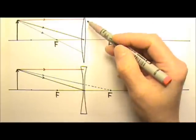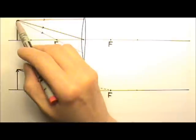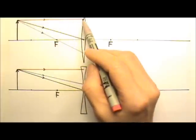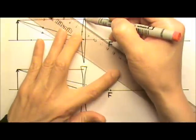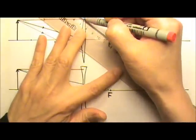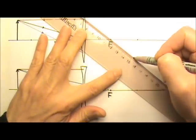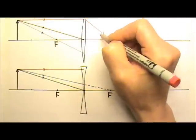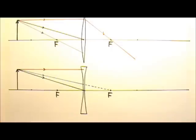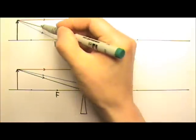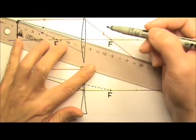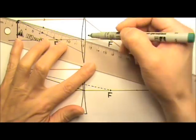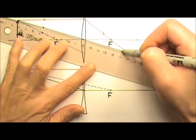A converging lens converges light. So the paraxial ray is going to get bent and go to the focal point, so this ray is going to go through the focal point. The ray that goes to the center is going to go straight and keep going, so this ray is going to keep going.